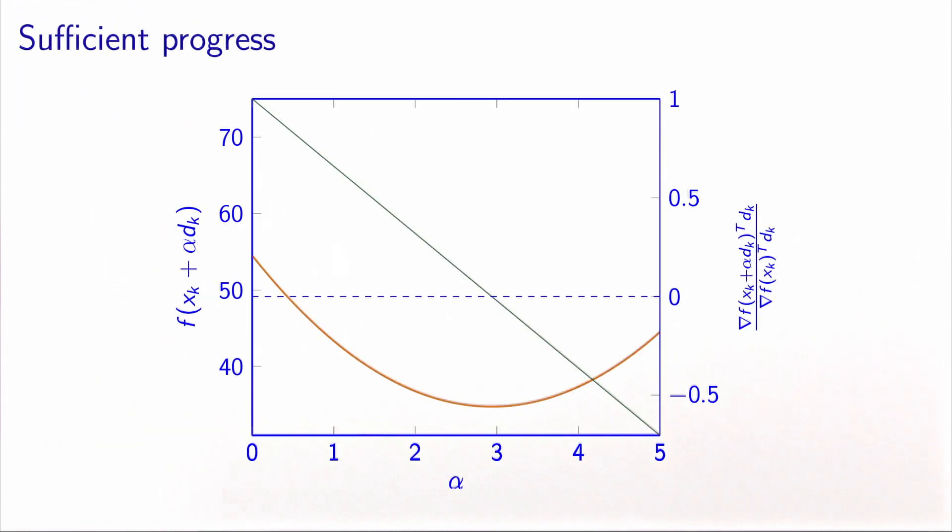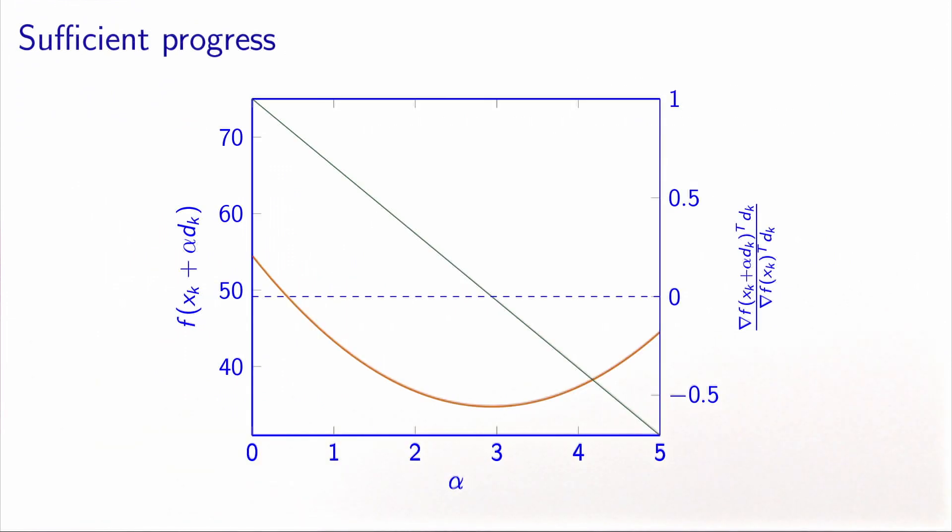Let's illustrate it on the picture. So I have again the same picture, but now the y-axis on the right represents this fraction, the ratio between the new value of the directional derivative and the old one. So it means that when alpha equals zero, we start from one, and then it decreases linearly as alpha increases. So we would like to select a value of beta, which we call beta two. And basically, we are rejecting any step that is on the left of this value, because we would like the value of alpha to achieve a sufficient reduction of this ratio. And the sufficiency of the reduction is characterized by beta two.